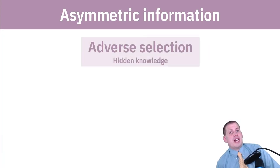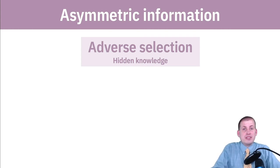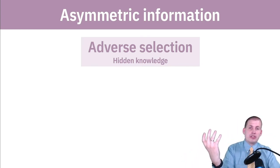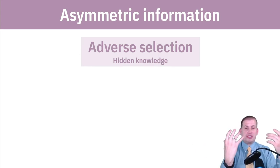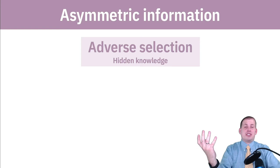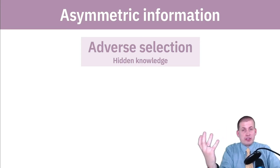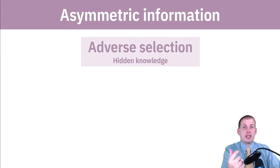The first type is this idea of adverse selection — I actually don't like this phrase because it's a weird, archaic phrase. The way I like to think of it is hidden knowledge. This is the idea that if you have two different parties, whether it be a manager and workers, a parent and children, or any sort of relationship, there's some knowledge that is hidden that one party would like to know but can't. And as a result of that hidden knowledge, behavior starts changing.